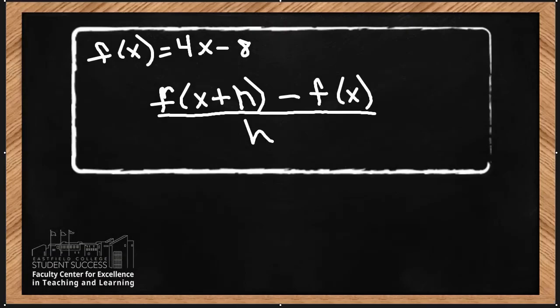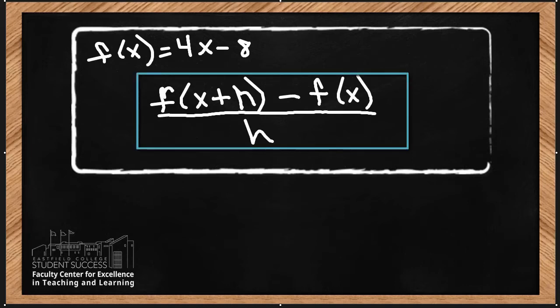Welcome to College Algebra Math 1314. Today we are going to be evaluating and simplifying the difference quotient. Here is our problem: f of x is equal to 4x minus 8, and this is the difference quotient f of x plus h minus f of x all over h.